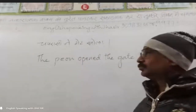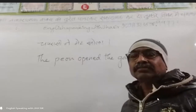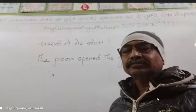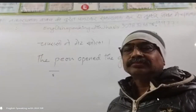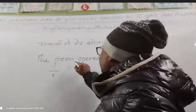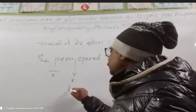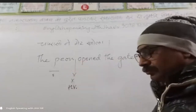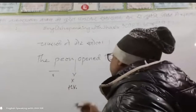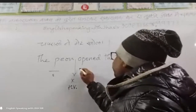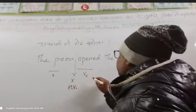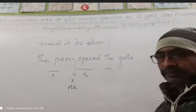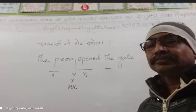Jaya, what is the subject of this sentence? Pune is the subject of the sentence. Sarika, is there any helping verb in this sentence? No, there is no helping verb. What is the main verb here? Open is the main verb. Jaya, what is the gate in that sentence? The gate is the object of the sentence.